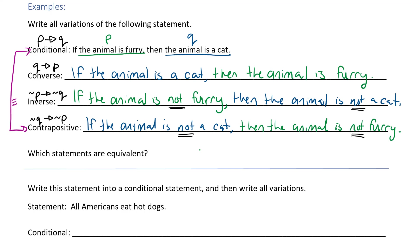The converse — if the animal is a cat, then the animal is furry — and the inverse — if the animal is not furry, then the animal is not a cat — are also equivalent. Now you can probably think up counter-examples to each of these statements. I'm sure you've seen furry animals that are not cats, and there is one breed of cat that doesn't actually have any fur. But the statements are still equivalent even if there is some sort of counter-example out there.